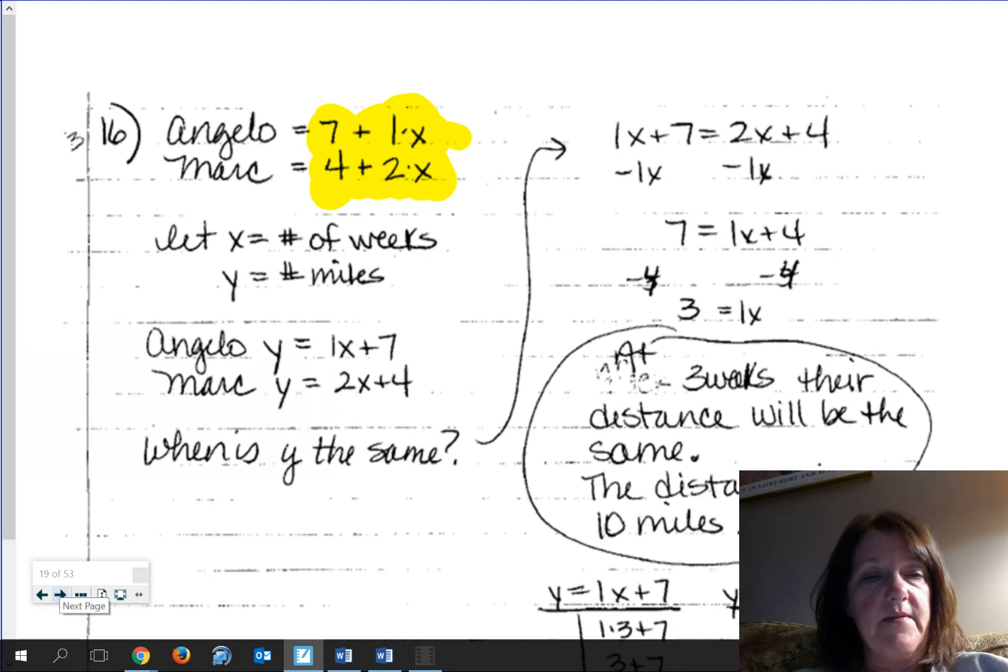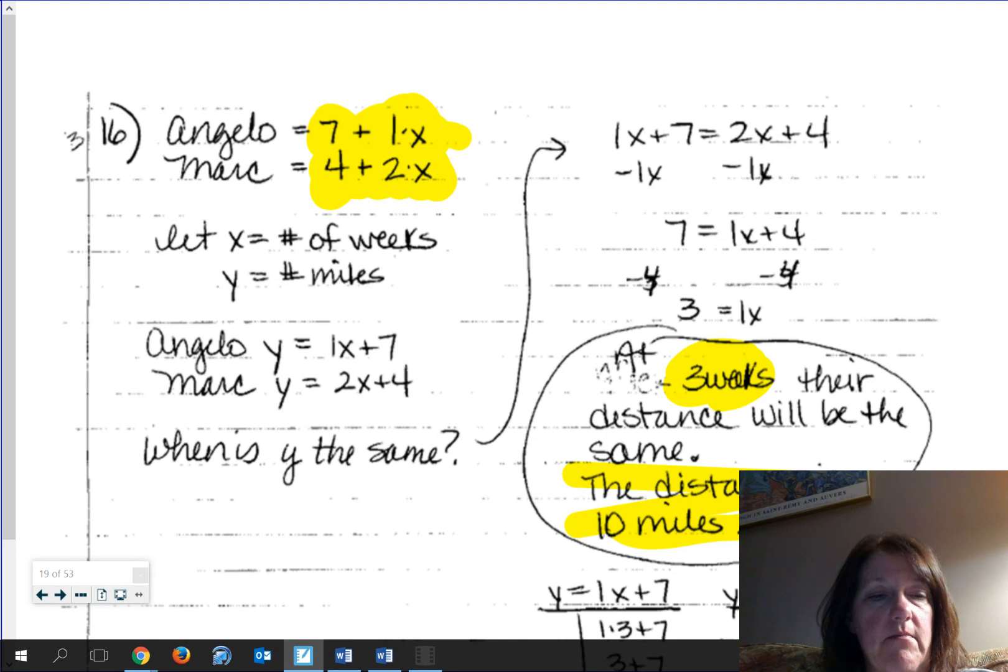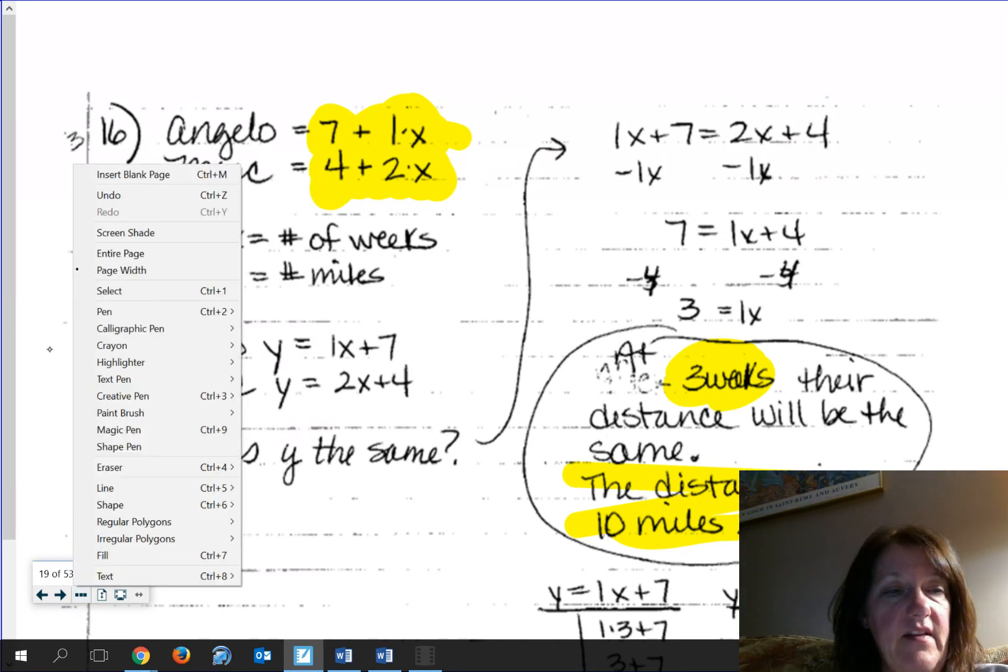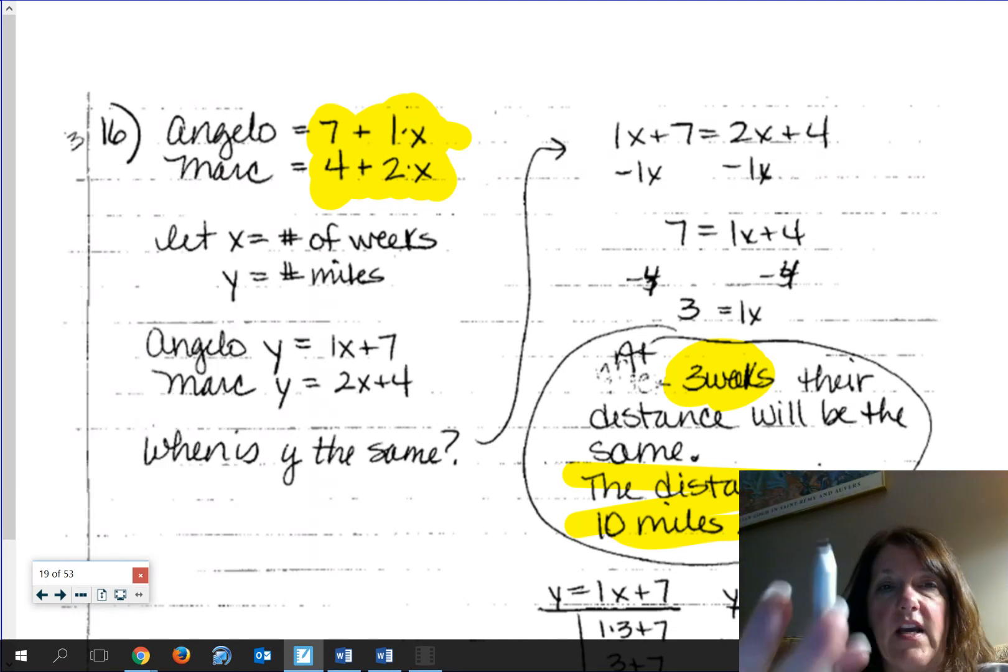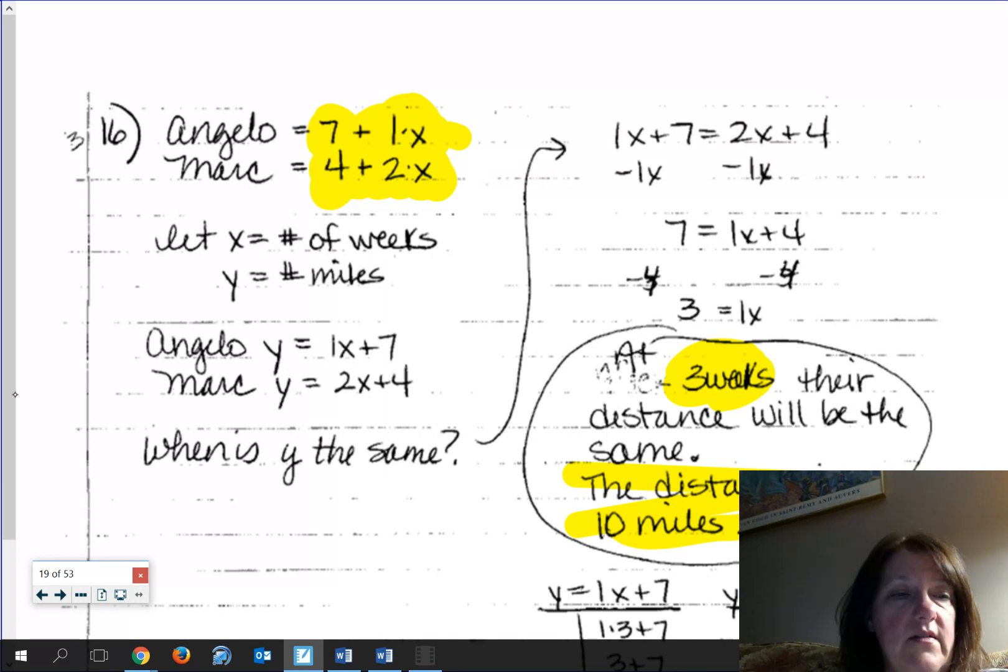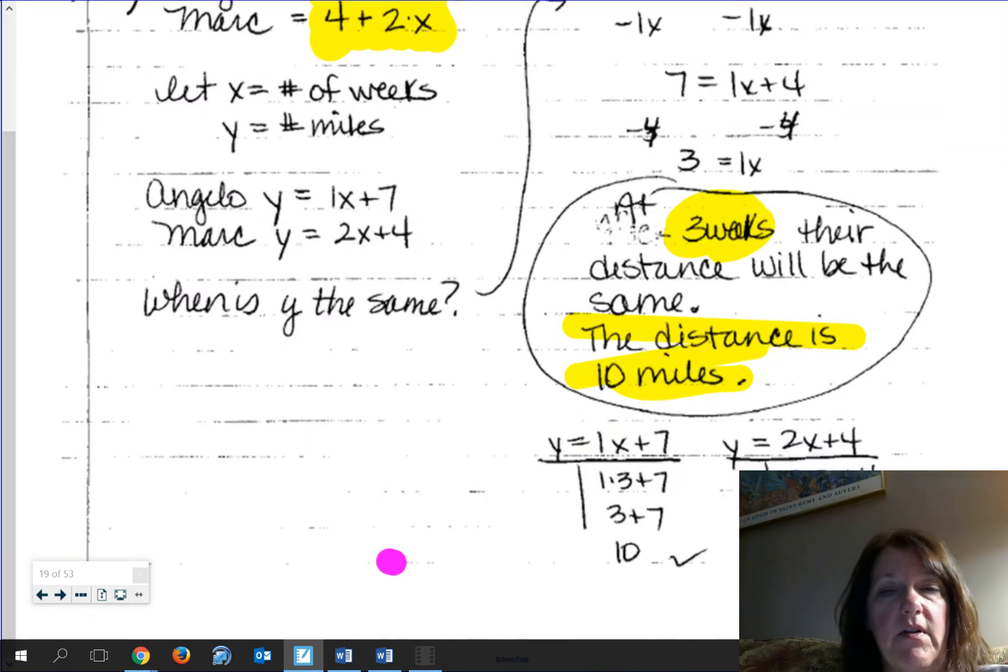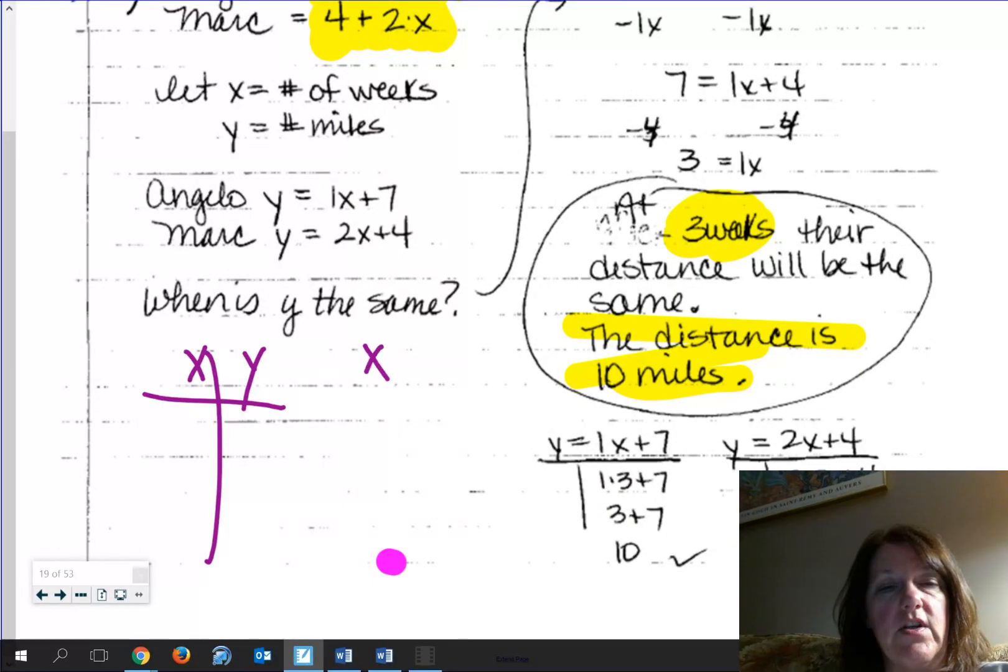So if you go ahead and graph them, here's what happens. At three weeks, you're going to find out that their distance is the same at 10 miles. Now you can graph it, which is kind of the plan. If you've done that, give yourself some room. Or, you could also create a table of values here, x and y, and do it for each equation and see what happens.